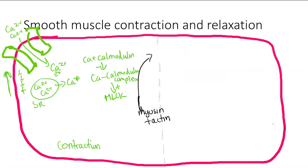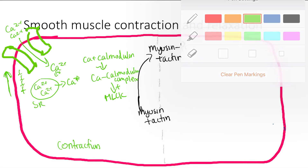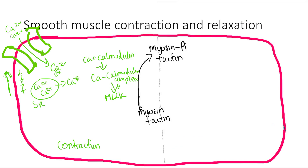So you get phosphorylation of myosin — myosin plus phosphate plus actin — and that is activation of the myosin. Now the myosin is ready to go with that phosphorylation energy. You get power strokes just like before, and you get muscle contraction, shortening, and tension.